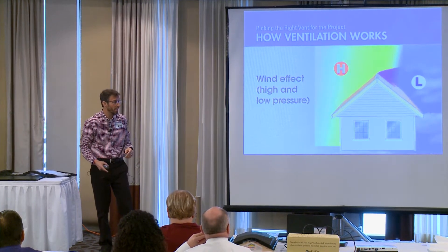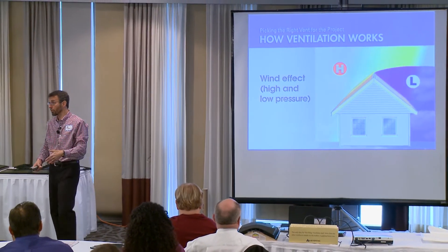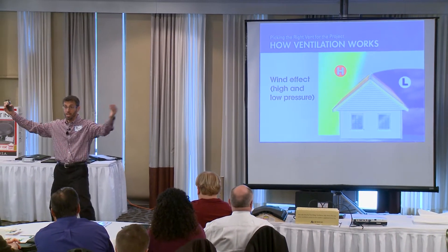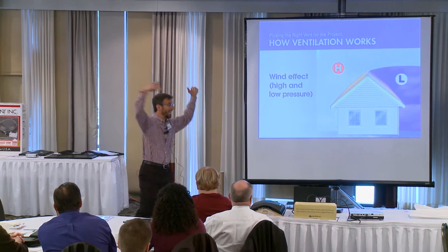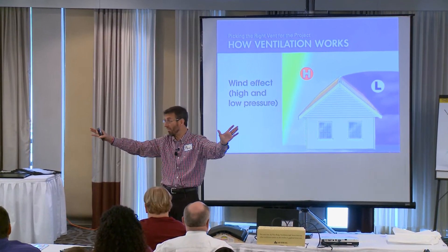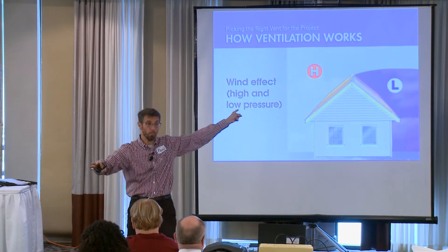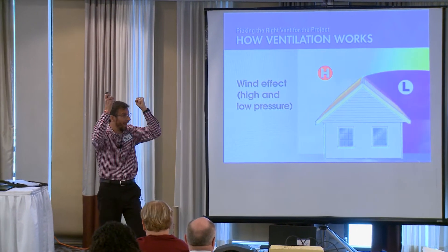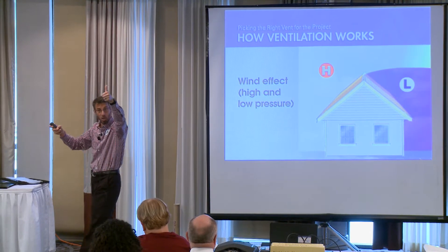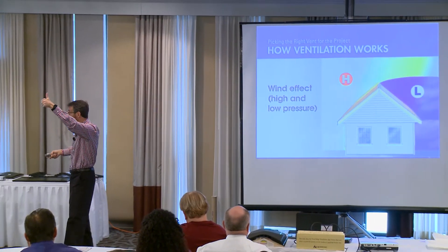When wind hits a house, it creates high pressure — shown in yellow — and low pressure in purple. High pressure can actually push air back into the exhaust vent, and we don't want that. Low pressure purple can pull air out of the vent, enhancing its performance. We want purple whenever we can get it.